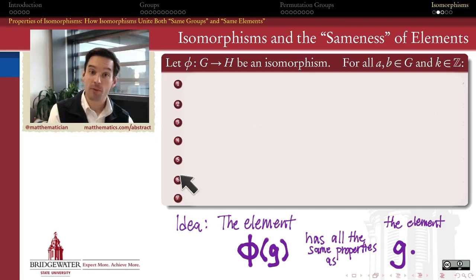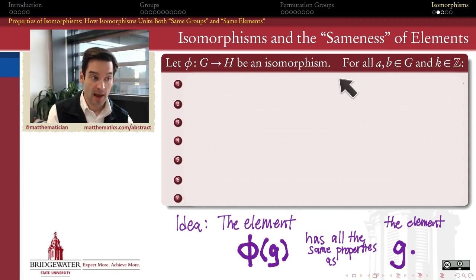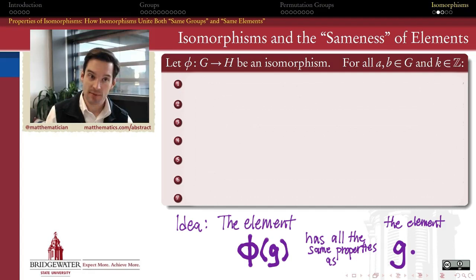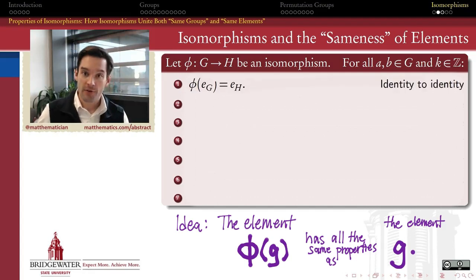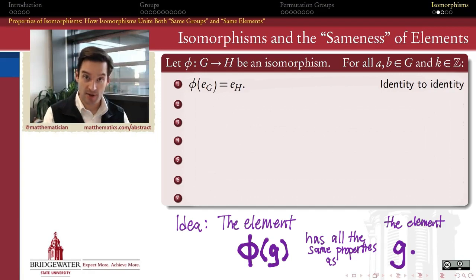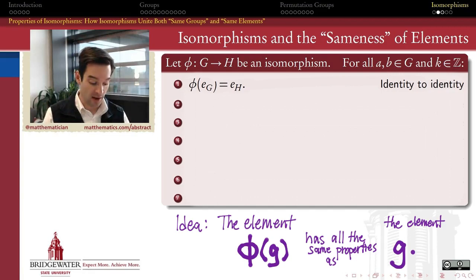There are going to be seven different ways in which we're going to substantiate this idea, and all of them are going to come with implicit quantifiers: they're going to be true for any elements A and B in the group G and any integer k. First of all, every isomorphism sends the identity element of G to the identity element in H — it associates the identity of one group with the identity of another group.